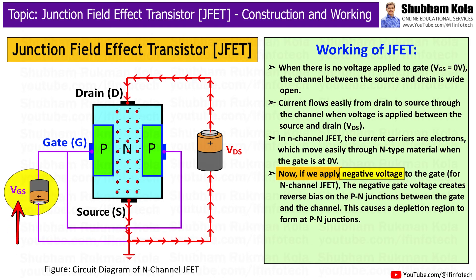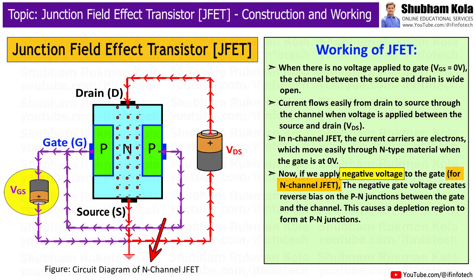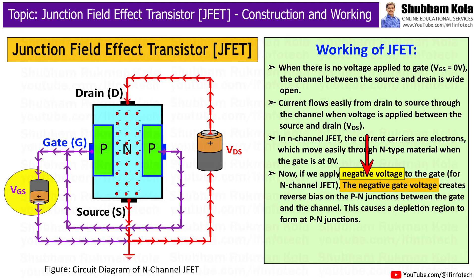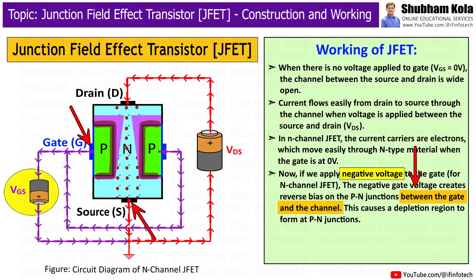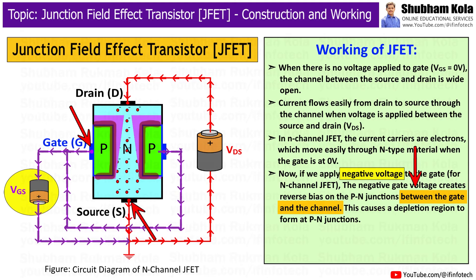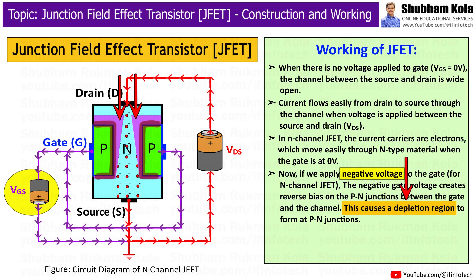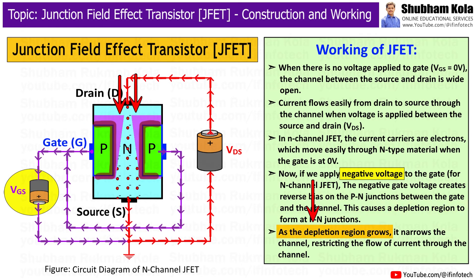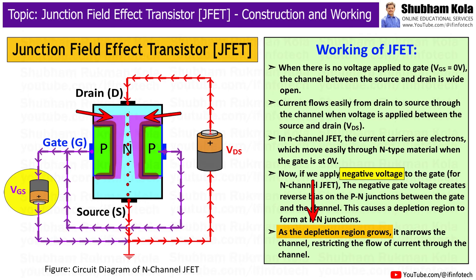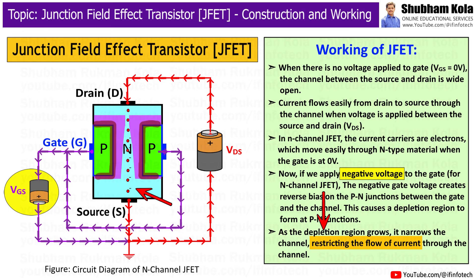If we apply a negative voltage to the gate in the case of an N-channel JFET, the negative gate voltage creates a reverse bias on the P-N junction between the gate and the channel. This causes a depletion region to form at the P-N junction. As the depletion region grows, it narrows the channel, restricting the flow of current through the channel.